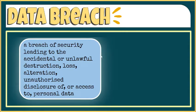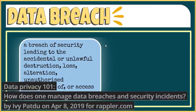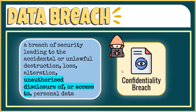Jam Jacob, who previously headed the Privacy Policy Office of the National Privacy Commission, identified three main types of personal data breach. The first category is confidentiality breach. This is caused by the unauthorized disclosure of, or access to, personal data. An example of this is when a hacker gains access to the personal data stored in a computer system.